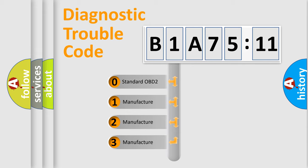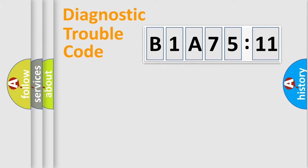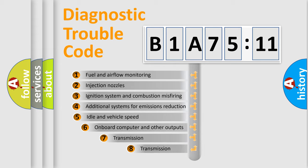If the second character is expressed as zero, it is a standardized error. In the case of numbers 1, 2, or 3, it is a manufacturer-specific expression of the car-specific error.